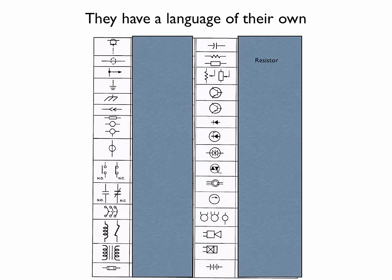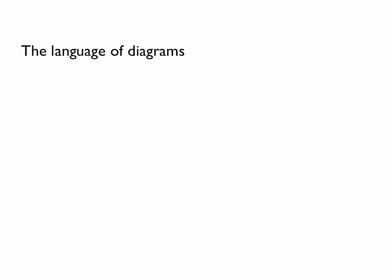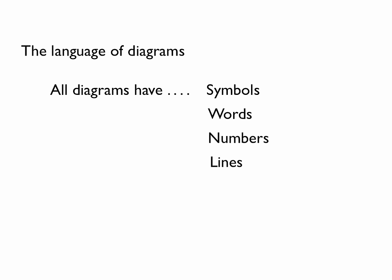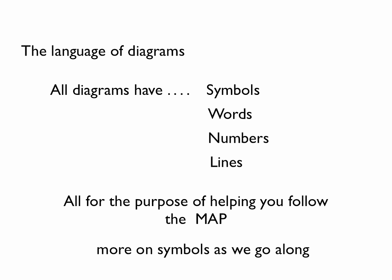Well in an electrical diagram they don't use words, they use symbols to say the same thing. So we have to understand the language of symbols. The language of diagrams always includes symbols, words, numbers, lines, all of this stuff. And it's all for the purpose of helping us follow the map.